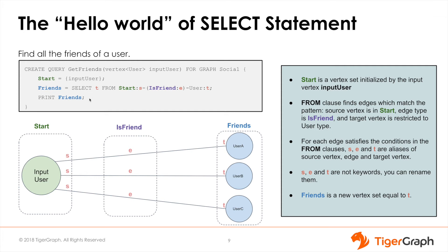So now let's review our query. When we first call our query get_friends, we pass in an input vertex of type user which we will use as the starting point for our graph traversal.